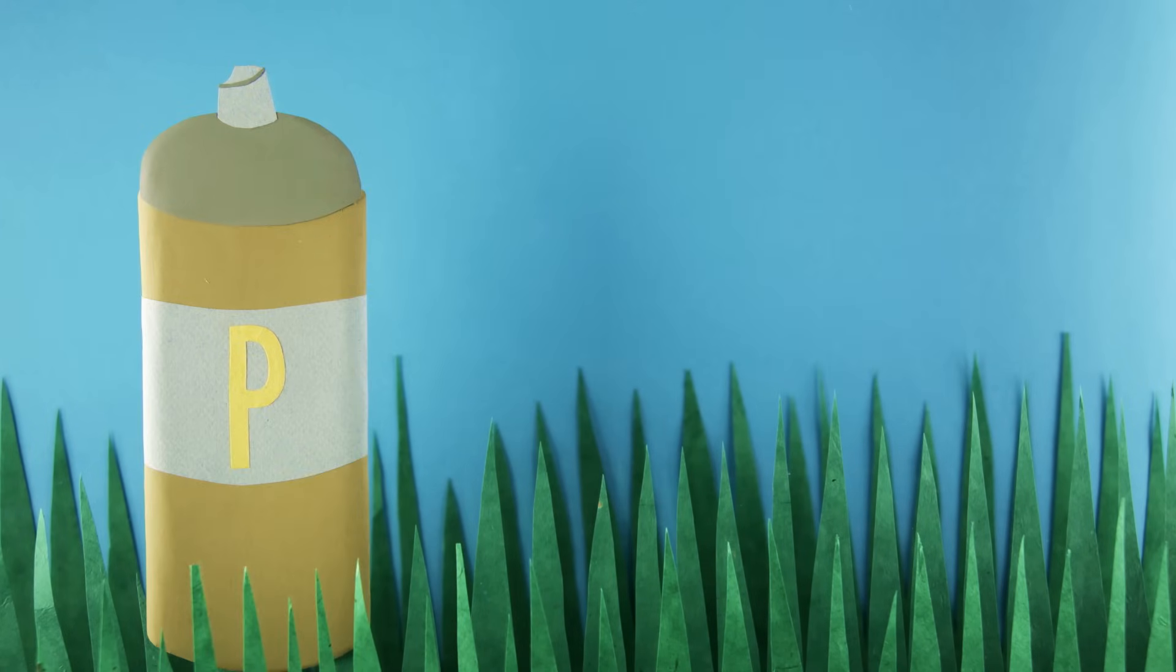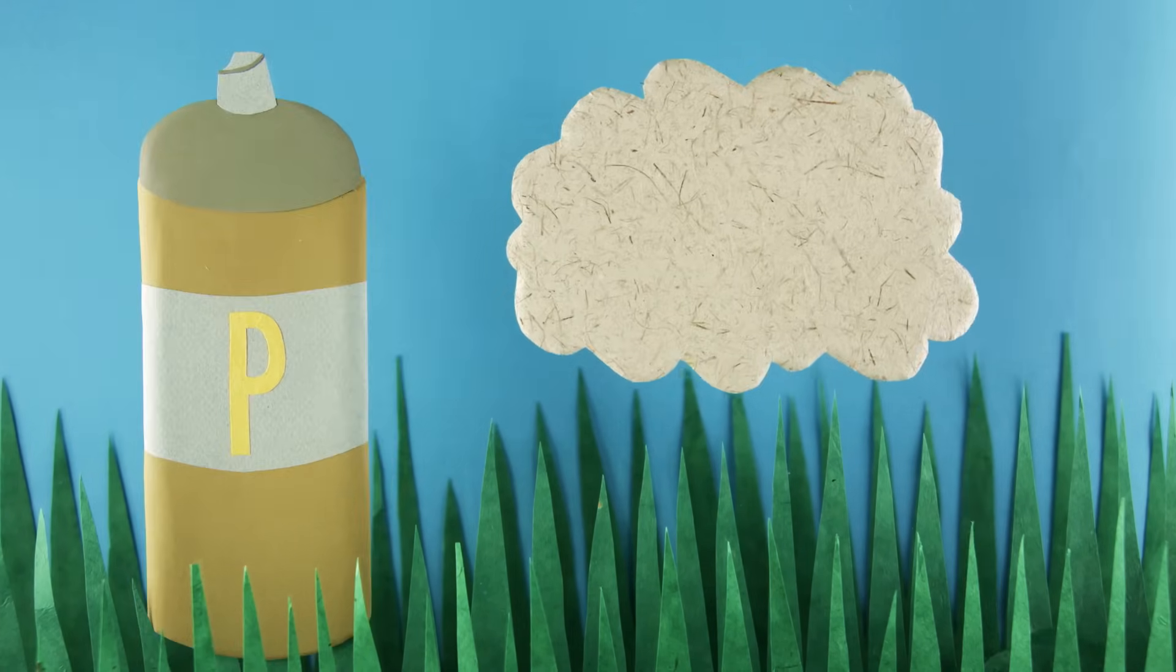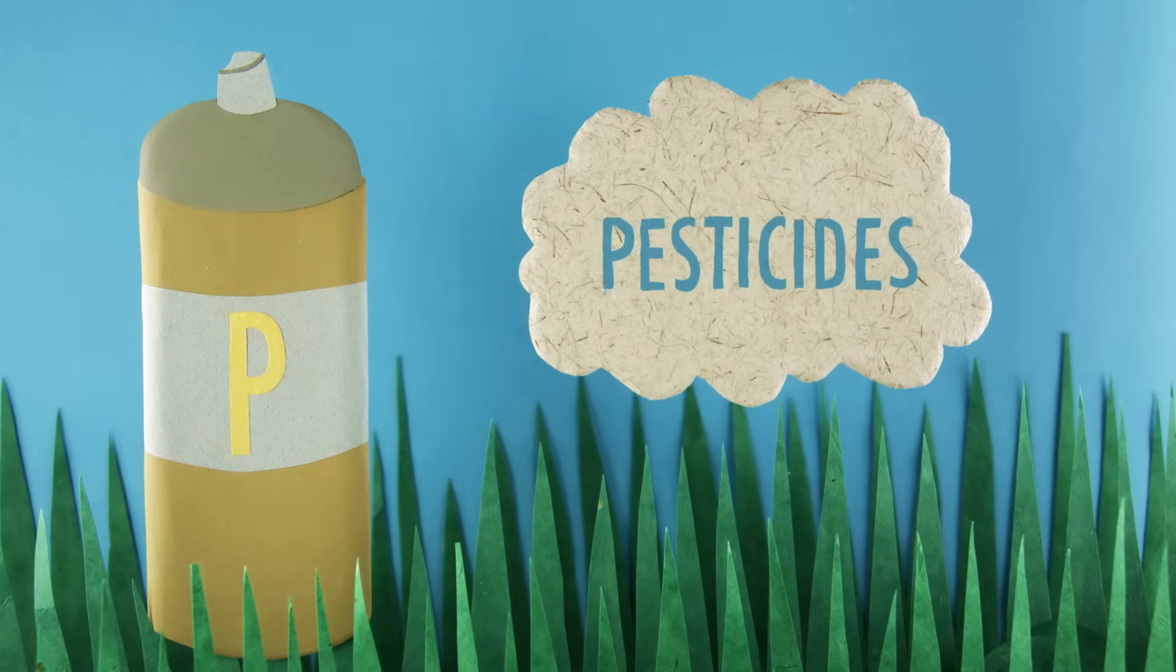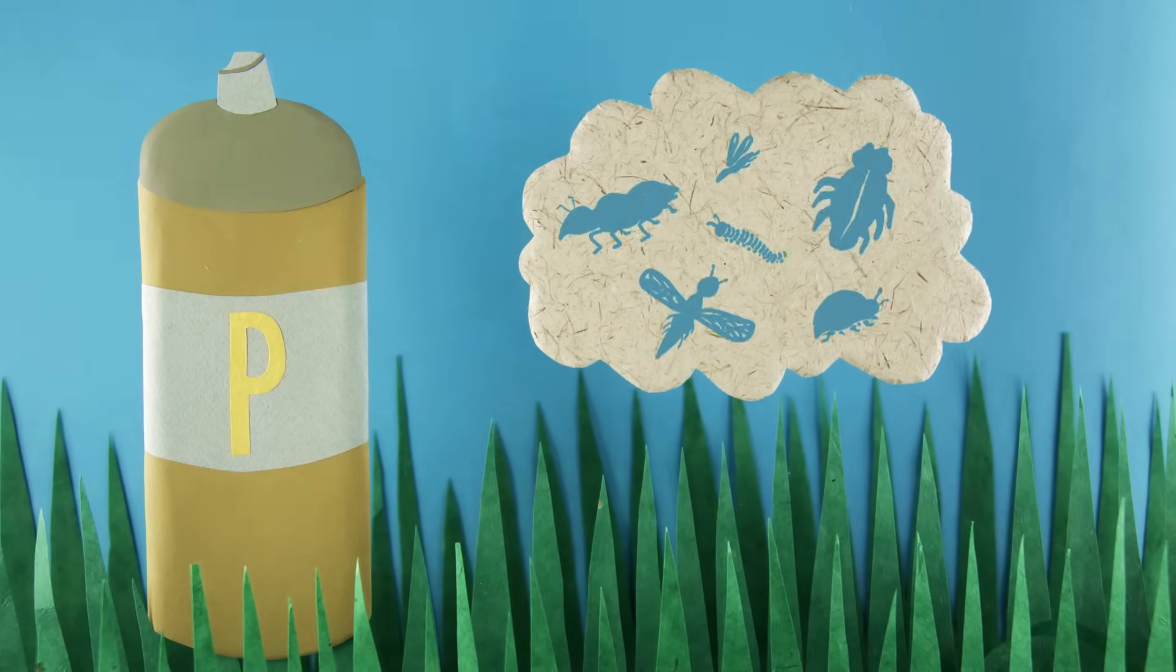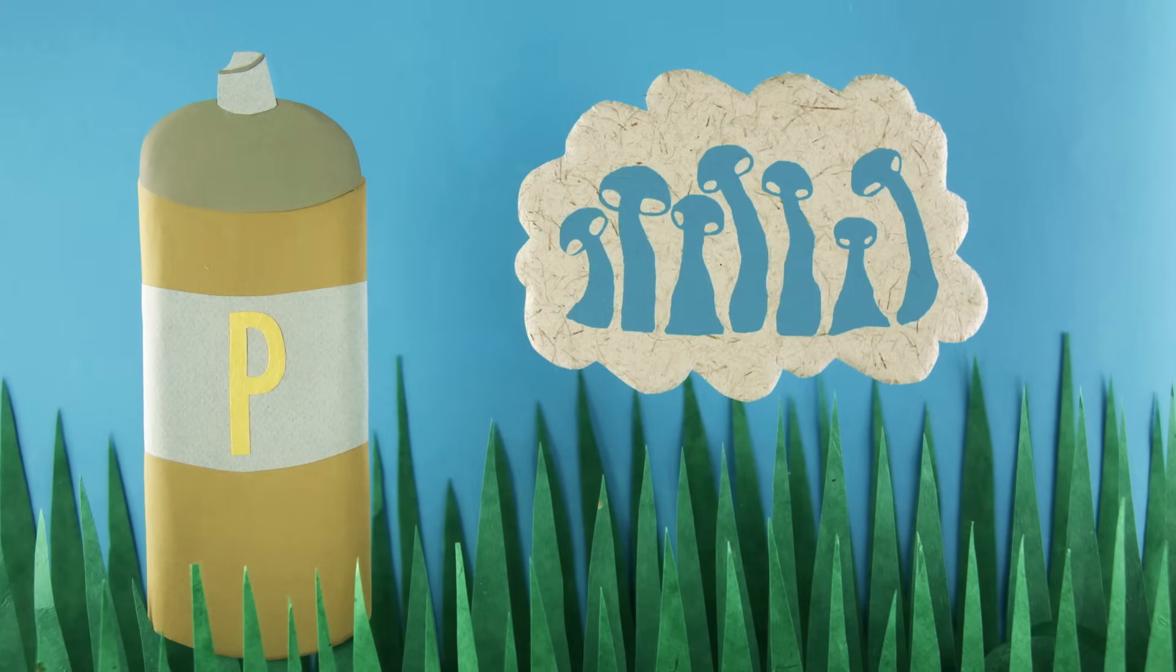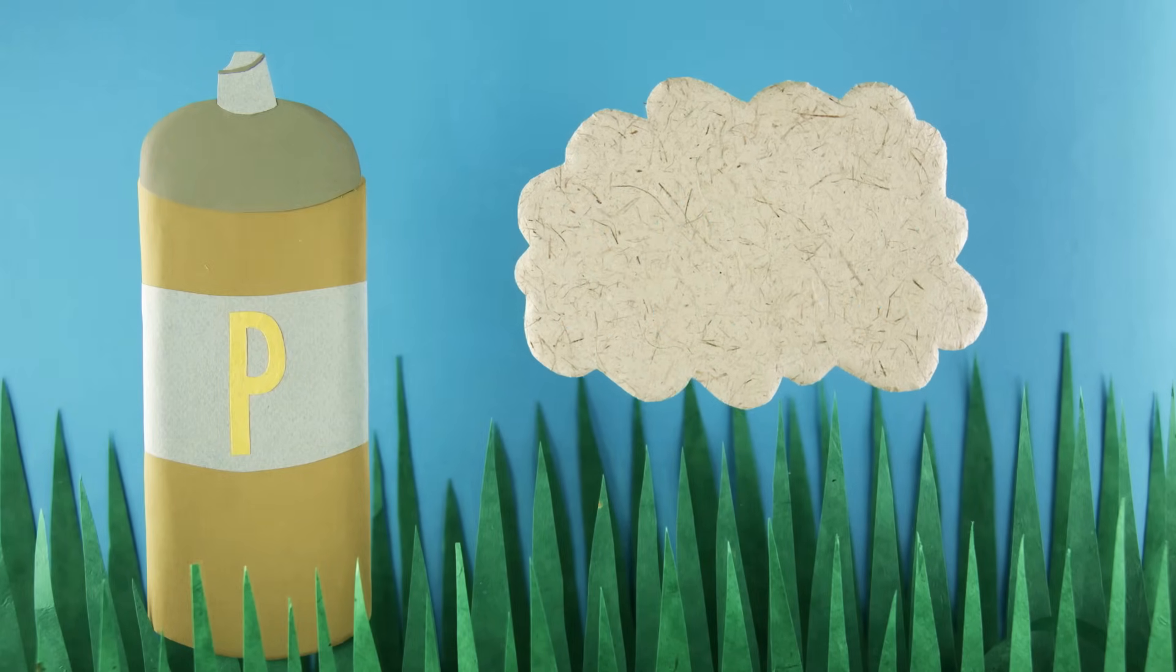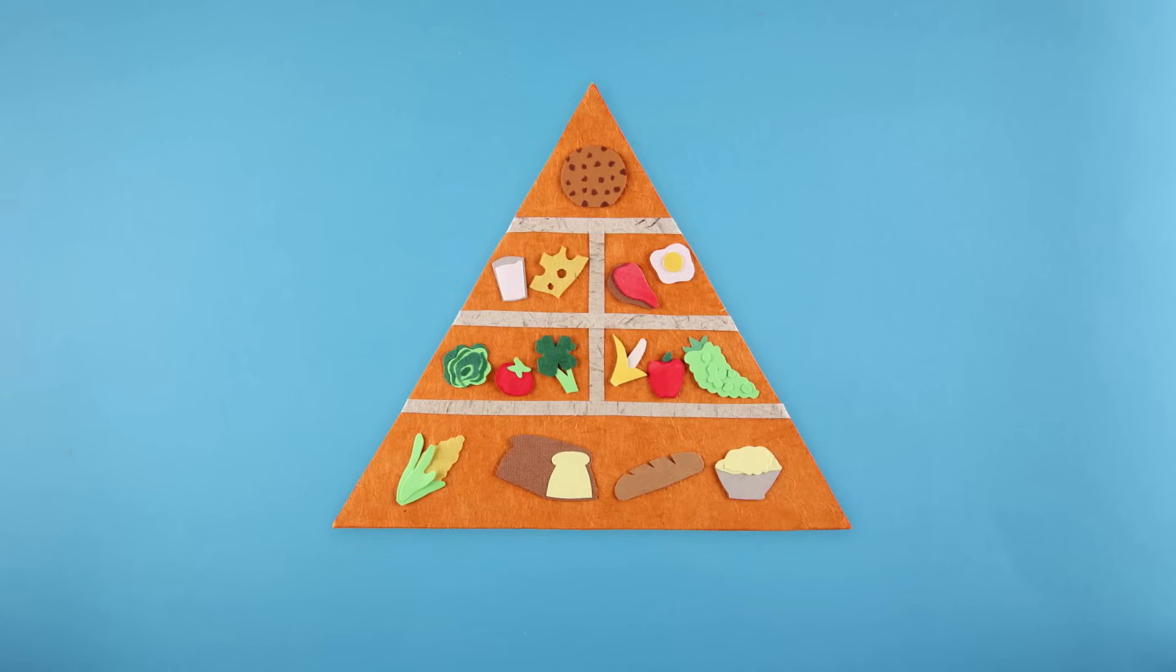Nowadays, we avoid such agricultural catastrophes with the help of pesticides. Those are a range of man-made chemicals that control insects, unwanted weeds, funguses, rodents, and bacteria that may threaten our food supply. They've become an essential part of our food system.